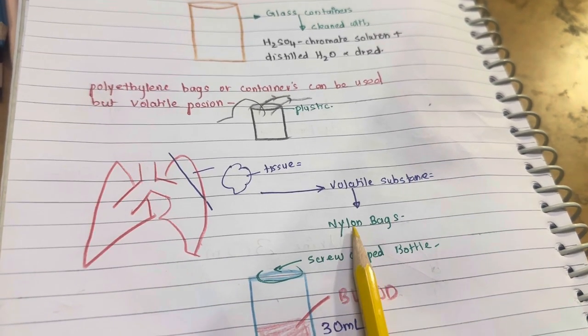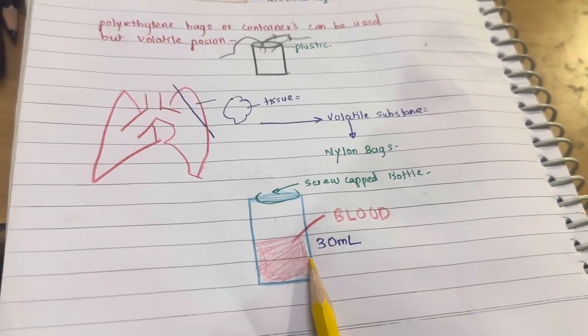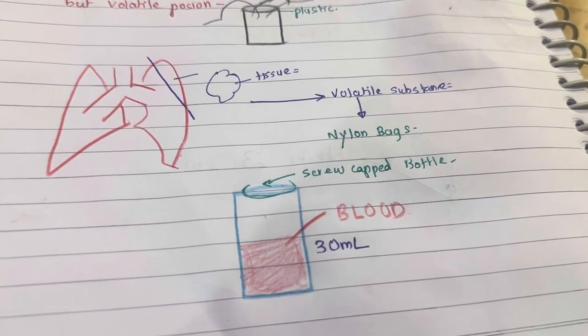They are not permeable to such substances. Blood should be collected in screw-capped bottles of 30 ml.